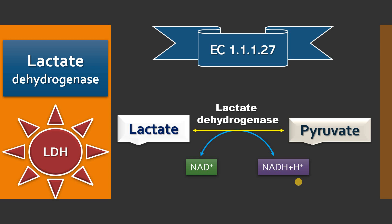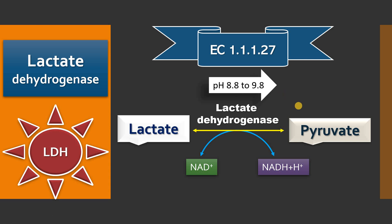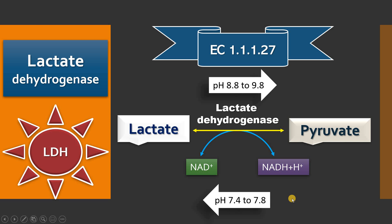If you carefully observe this reaction, the forward reaction — the conversion of lactate to pyruvate — has an optimum pH of around 8.8 to 9.8. Whereas the backward reaction — the conversion of pyruvate to lactate — has an optimum pH of around 7.4 to 7.8, which is the physiological pH.